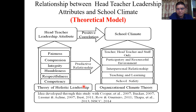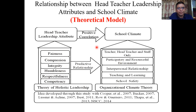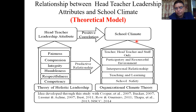Out of 14 variables which I had discussed, only six variables of head teacher leadership attributes — competency, respectfulness, humbleness, integrity, compassion, and fairness — had a predictive relationship with the school climate constructs. And as a whole, there was a positive correlation between head teacher leadership attributes and school climate. This is the outcome of the study and it acts as a theoretical model or framework. On the basis of the conceptual model, I conducted the study and developed this theoretical model.